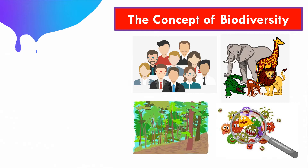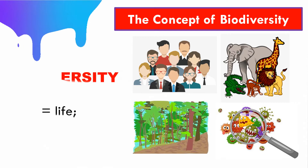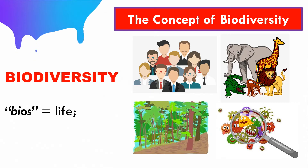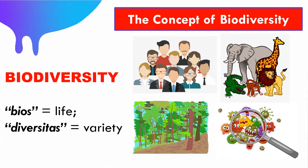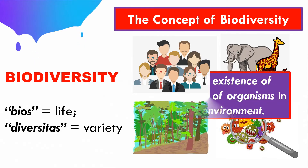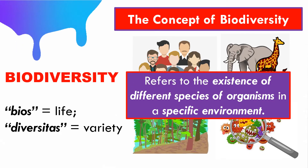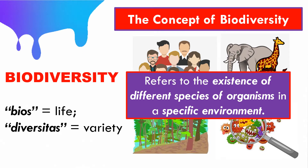What is biodiversity? The term biodiversity came from the word 'bios,' which means life, and 'diversitas,' which means variety. Therefore, biodiversity refers to the variety of life in an area. Biodiversity also refers to the existence of different organisms, such as humans, plants, animals, and microorganisms in a specific environment.